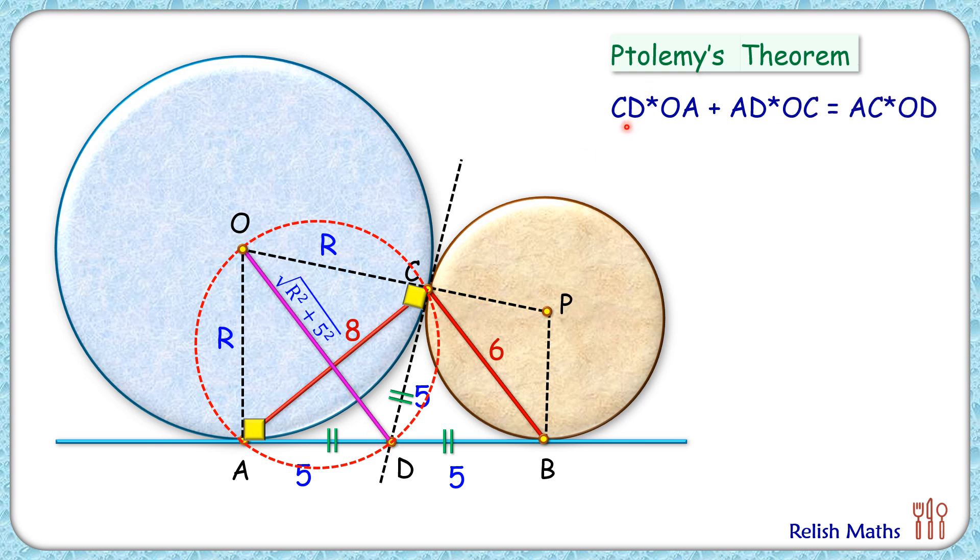Now here putting the values, CD is 5 and OA is R. So same way putting values here we get 5 times R plus 5 times R equals 8 times square root of R square plus 5 square.